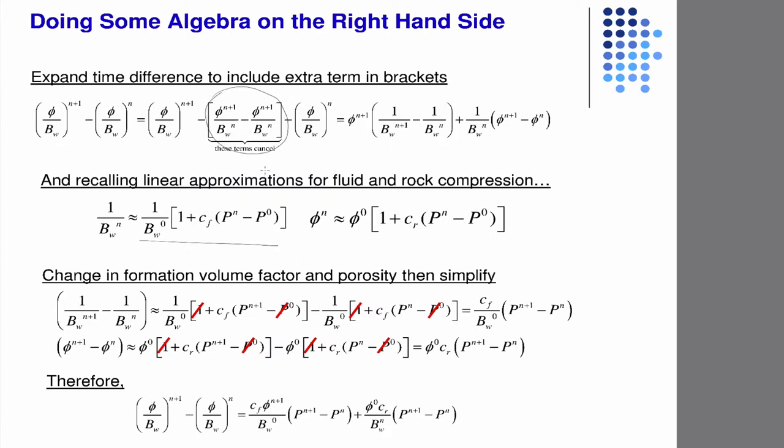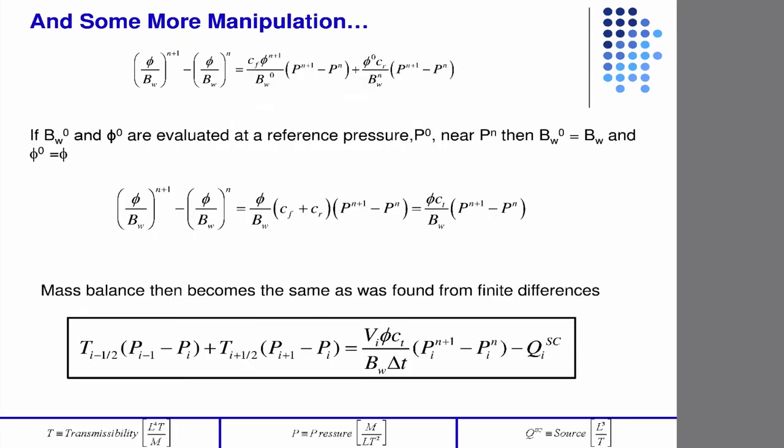The trick here is that we're just subtracting 0. I know it's odd to do that, but it works out in this case so you can manipulate the equations. More manipulation, then you get this final equation.